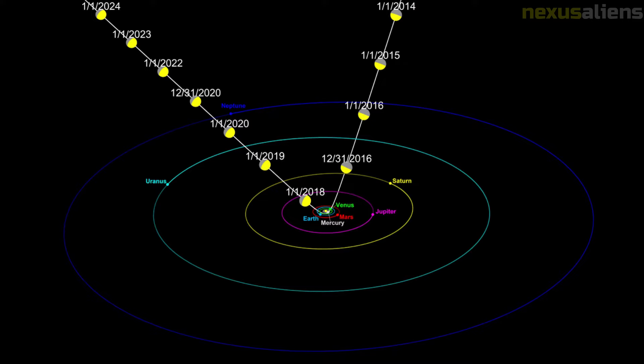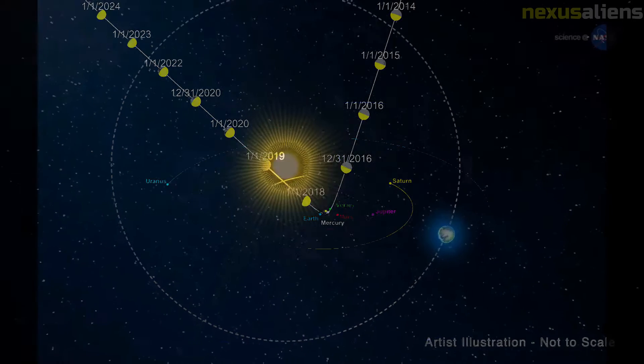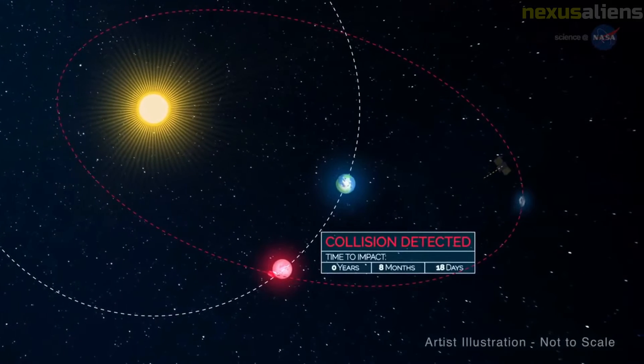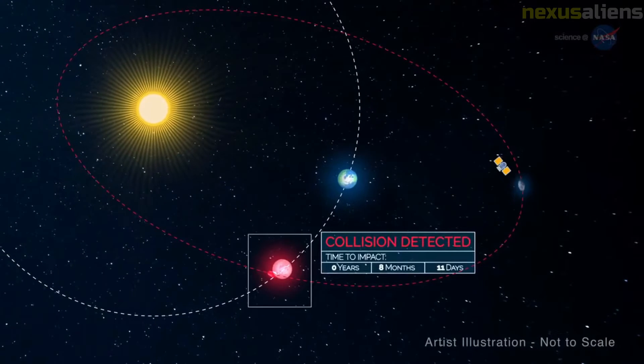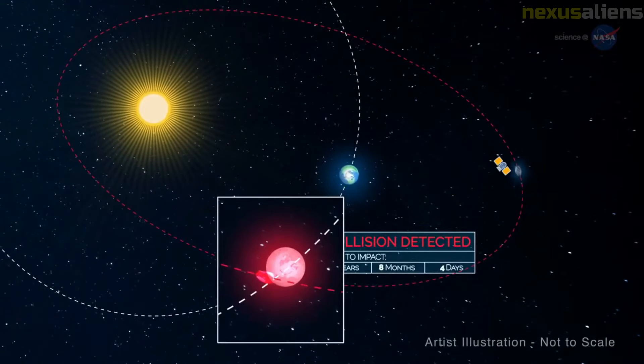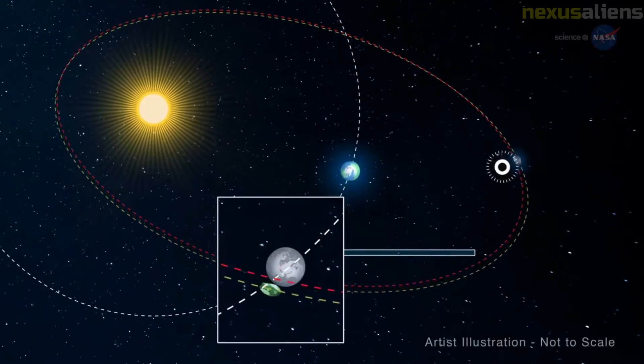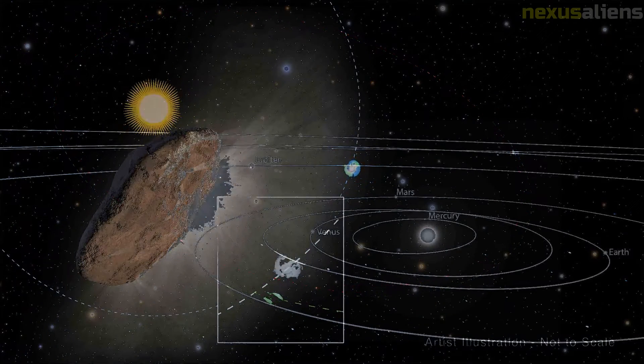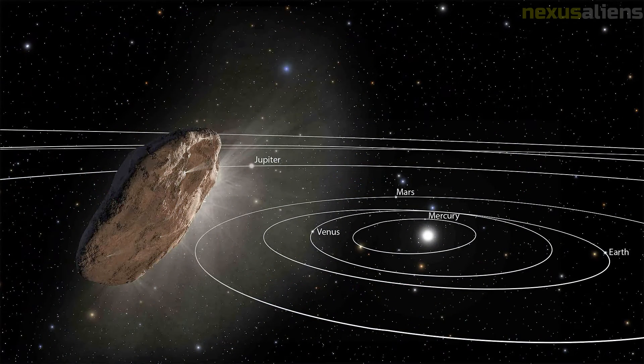This study also identifies future close encounters of Oumuamua on its outgoing trajectory from the sun. In September 2018, astronomers described several possible home star systems from which Oumuamua may have originated. In April 2020, astronomers presented a new possible scenario for the object's origin.